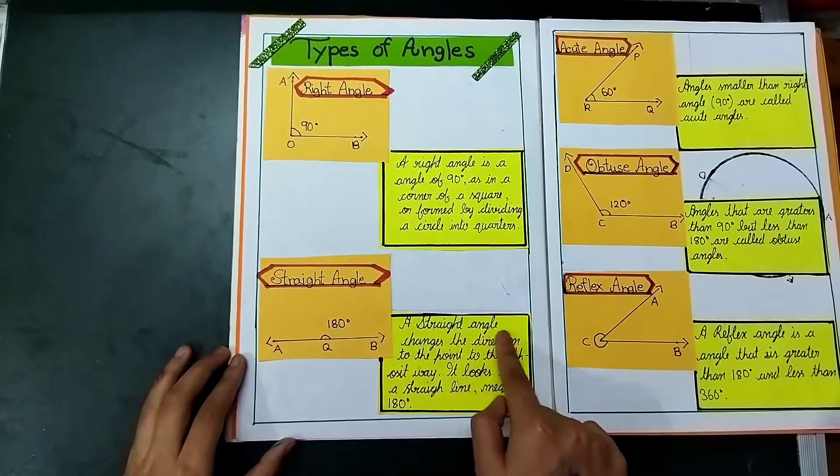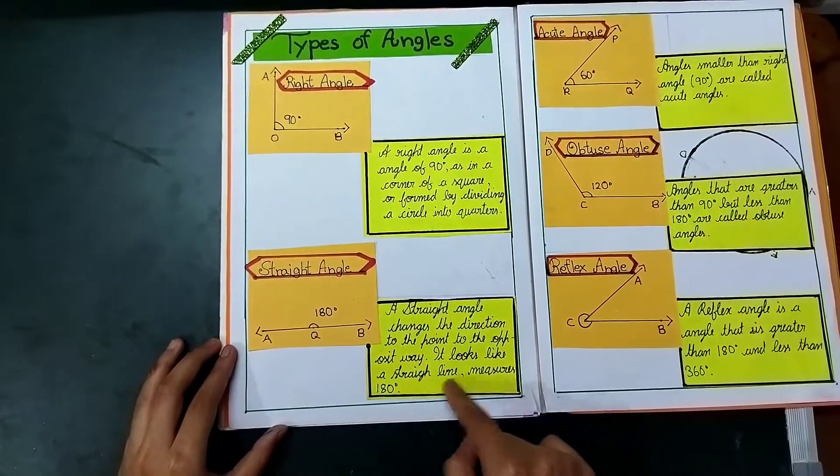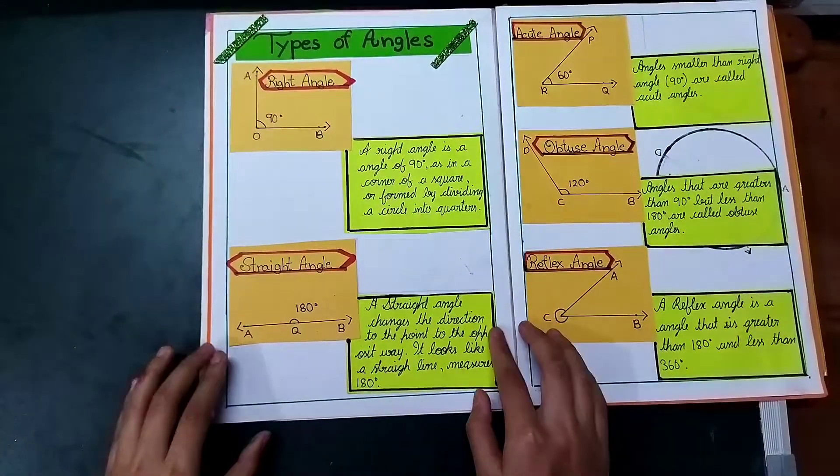Now straight angle. A straight angle changes the direction to point the opposite way. It looks like a straight line measured 180 degree. Here is the definition of the straight angle.